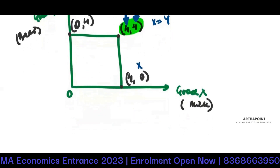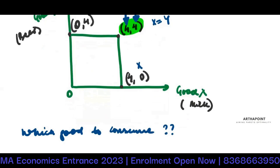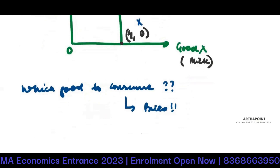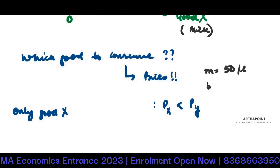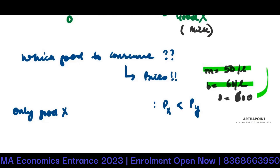The question that then arises is: which good to consume — should I consume good X or should I consume good Y? The answer is that it depends on the prices. If the price of good X is less than the price of good Y, then I will consume only good X, because from the same income I can buy more. For example, if milk is 50 per liter and beer is 60 per liter and income is 600, you will consume the good which is cheaper, since you cannot consume the two together.